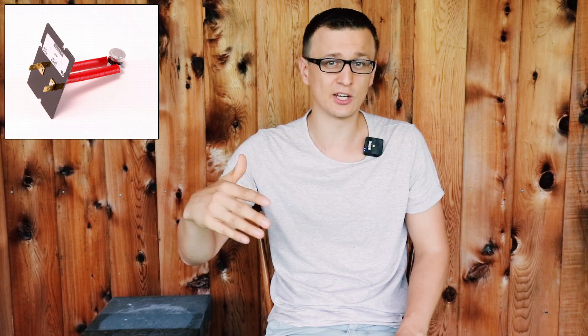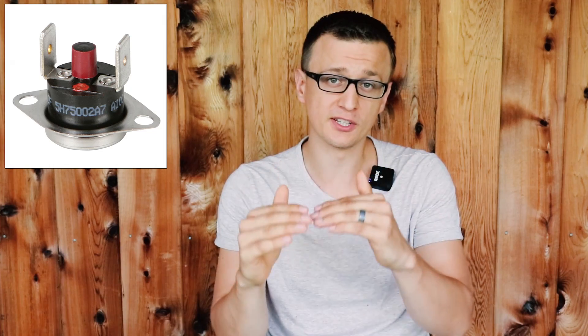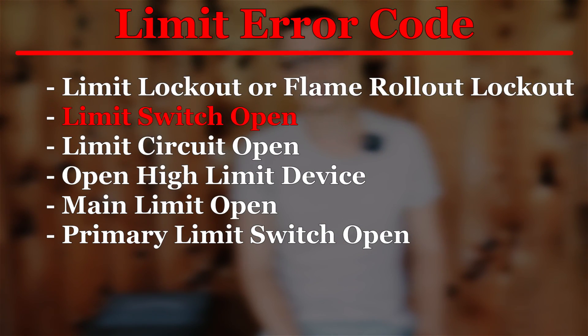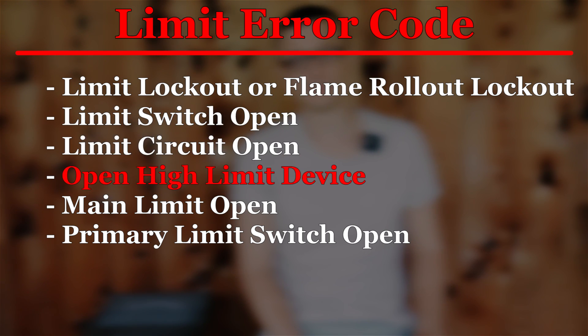Moving on to the next error code: limit switch or rollout switch open. Even though these are two different safety switches on a furnace, on most furnaces both of them are grouped together under the same error code. The purpose of the high limit is to shut the furnace off if the furnace is overheating or getting too hot. The purpose of the flame rollout switch is to shut the furnace off if for some reason your combustion fumes are coming back out of the heat exchanger and back into the burner box. Here are a few examples of what a limit error code would look like: limit lockout or flame rollout lockout, limit switch open, limit circuit open, open high limit device, main limit open, primary limit switch open. Even though the wording is all different, it's all talking about the same thing — usually it's the high limit switch, but on some furnaces limit lockout may refer to either the high limit or the flame rollout.